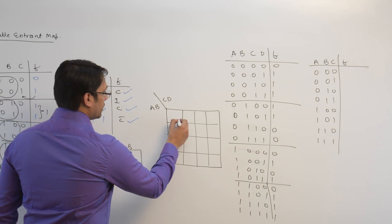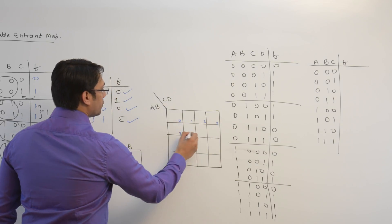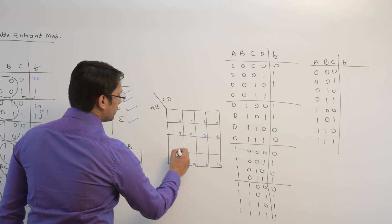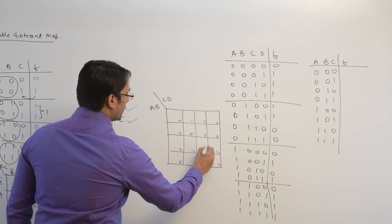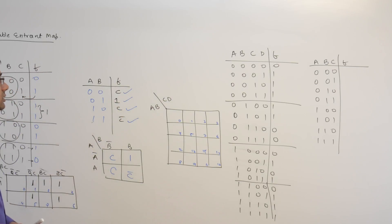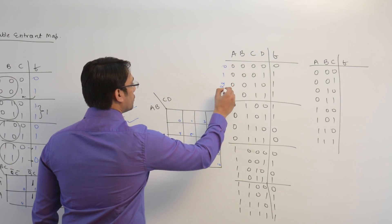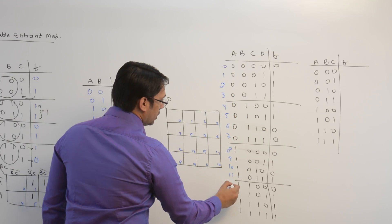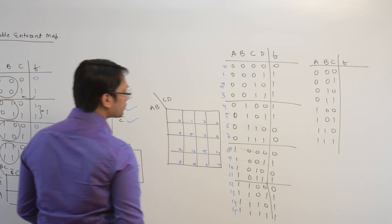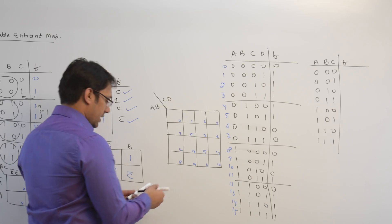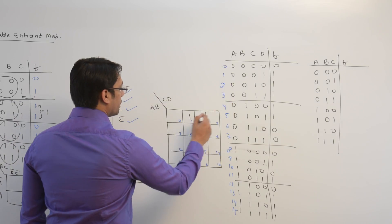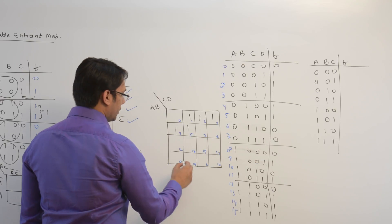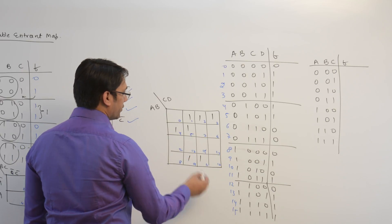The 16-cell K-map has AB on one axis and CD on the other, giving positions 0 through 15. The function F takes the value 1 at positions 1, 2, 3, 4, 5, 9, 11, 13, 14, and 15.